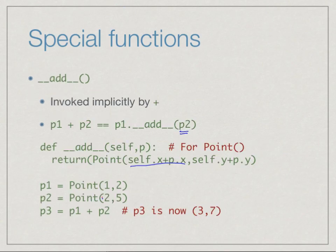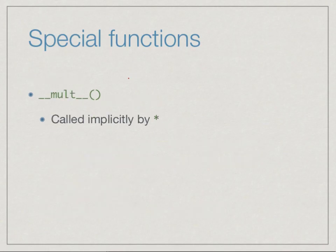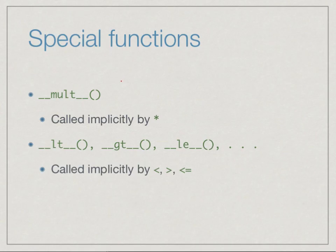For example, if we have two points at (1, 2) and (2, 5), this returns a new point at (3, 7). In the same way, underscore underscore mult is the special function implicitly called by the multiplication operator. Similarly, we can define comparisons — whether p1 is less than p2 could check both coordinates or the distance from the origin; we have complete freedom. Writing p1 less than p2 calls underscore underscore lt, and greater than calls underscore underscore gt.